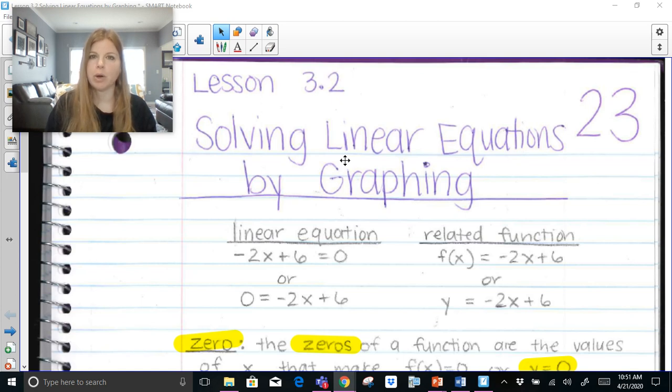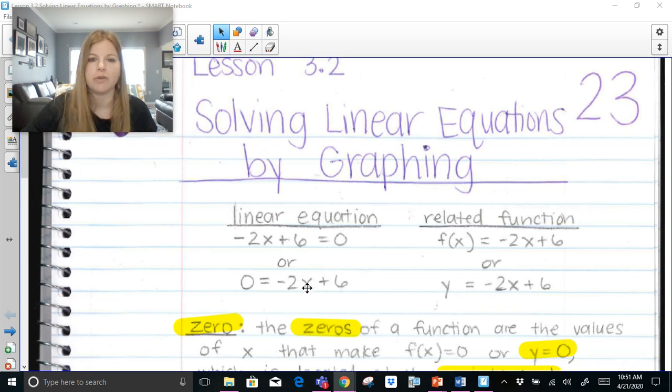So far you know how to solve a basic equation. If I gave you this equation, -2x + 6 = 0, you would go ahead and simply solve for x. You would subtract 6 on both sides and divide both sides by -2 to solve for x.